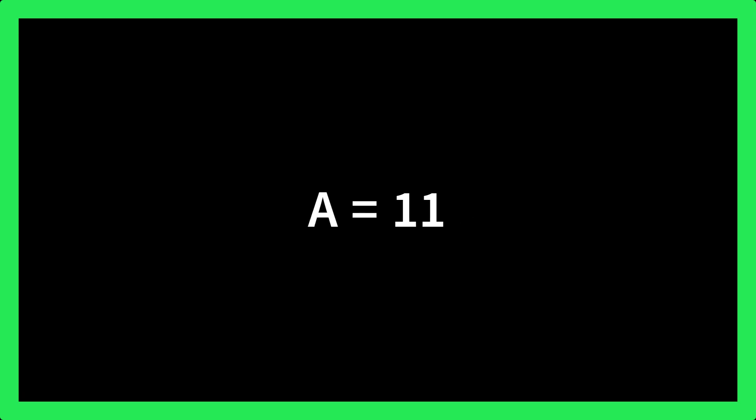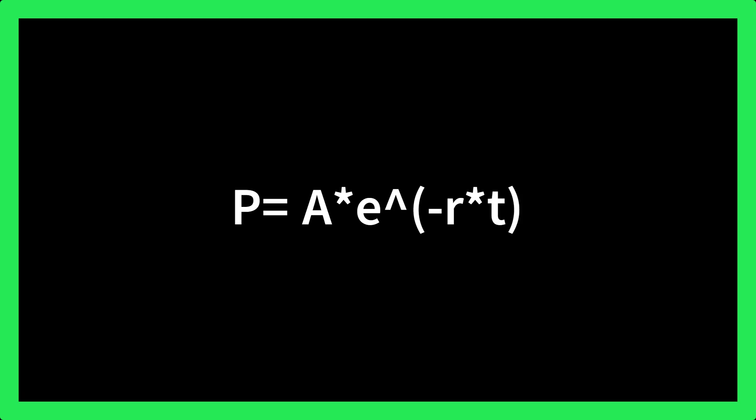To find the present value, we can use the following formula: P equals A multiplied by E raised to the power minus RT.